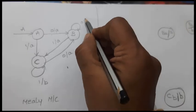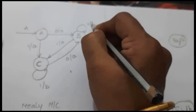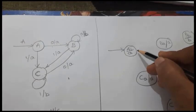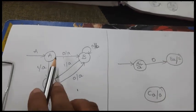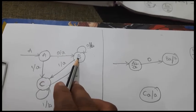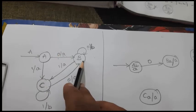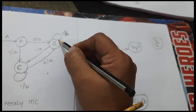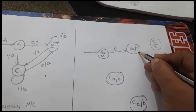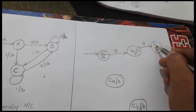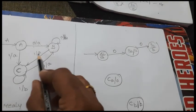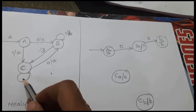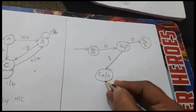Now let us draw the transitions. State A with zero input goes to state B with output A, so it leads to BA. State A with zero input leads to BA/A. Next, looking at state B with zero input — it has output B — so it goes to BB. State B with one input goes to C with output A, so it leads to CA.